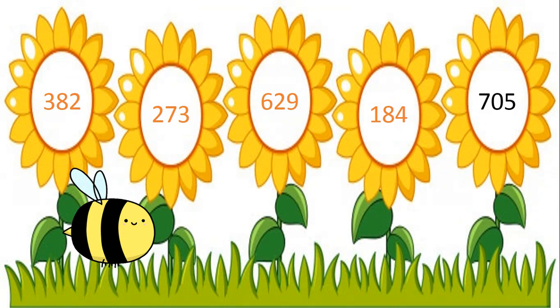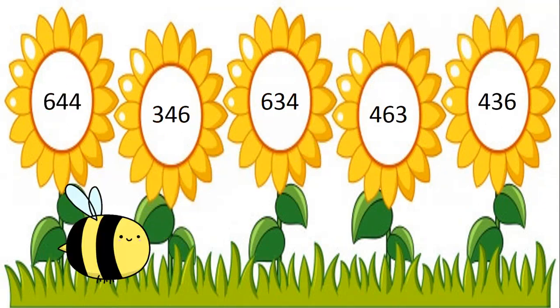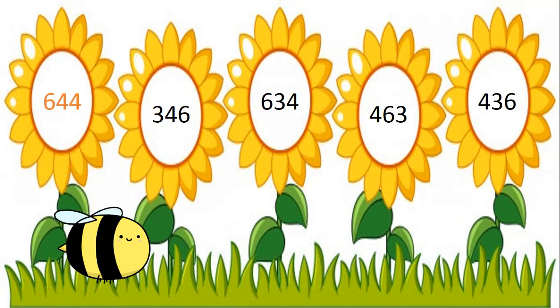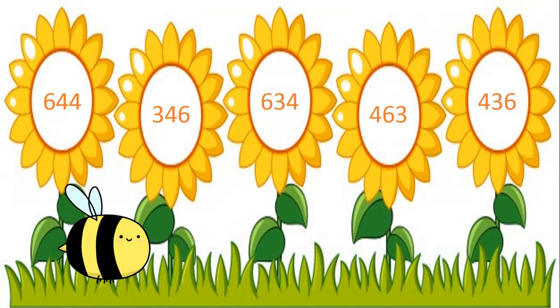Mrs. Buzzy, do you have some more number flowers? Yes, come with me. My dear children, here are some more numbers on flowers. Again we will find the greatest number. Let us read the numbers: 644, 346, 634, 463, and 436. To find out the greatest number, let us see the digits in the hundreds place. That is 6, 3, 6, 4, 4.